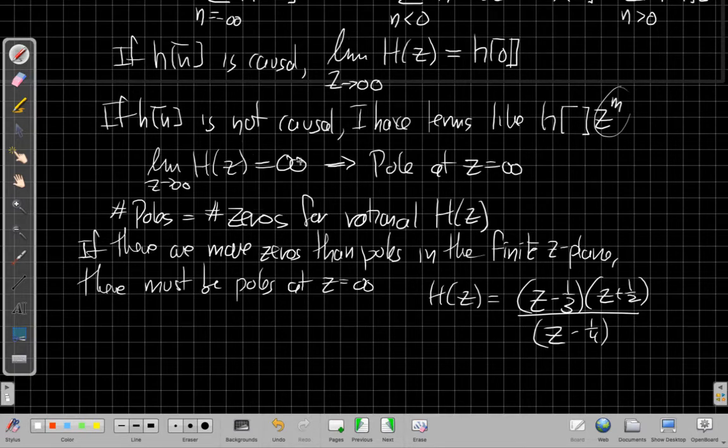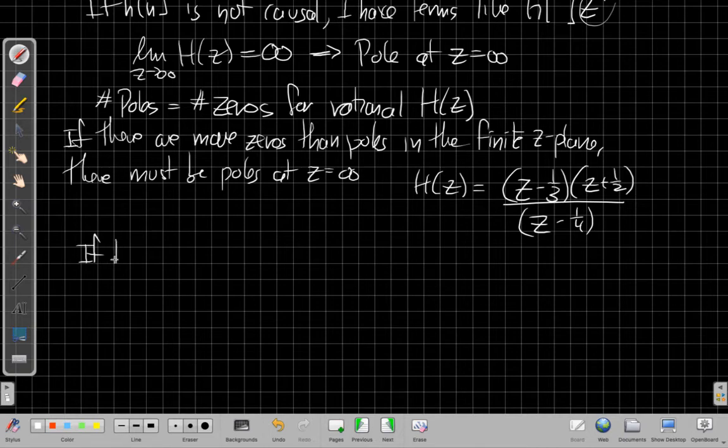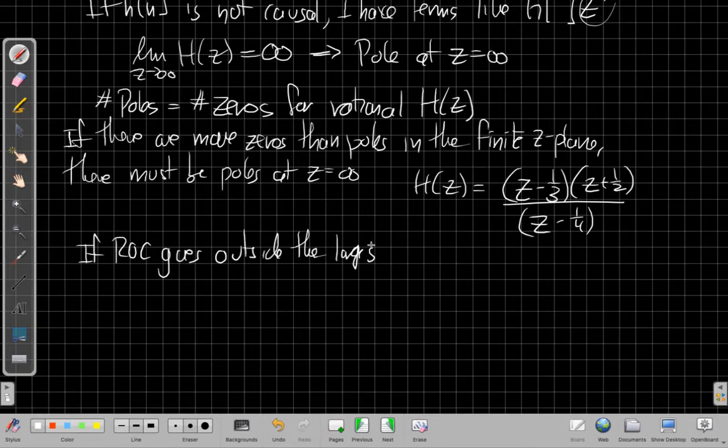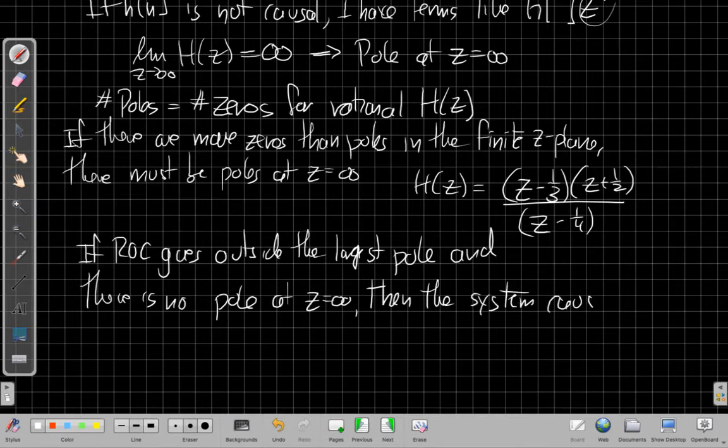So non-causal systems, systems that are not causal have poles at infinity. Or flipping that around the other way, we can say if the ROC goes outside the largest pole, so we have an ROC that goes outside the largest pole and there is no pole at infinity, then the system is causal. So again, that's a pretty easy check. I can just look at that pole zero diagram and say when the ROC is going outwards from the biggest pole, so it's not a circle coming in or not a donut, but going outwards, and there's no pole at infinity. I count the poles and zeros and there aren't any poles missing. I have an equal number in the plane. Or I could have zeros at infinity. That's okay, but I can't have poles at infinity. Then the system is causal.